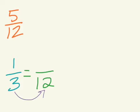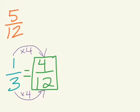To get from three to twelve, multiply it by four. Whatever you do to the denominator, you have to do to the numerator, so multiply that by four as well, and one times four is four. So that's the new fraction that we're working with.